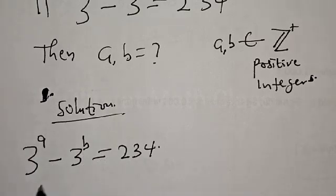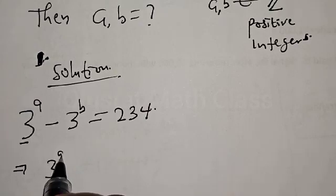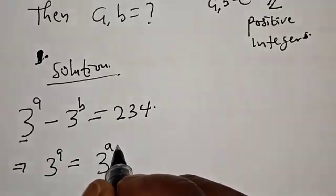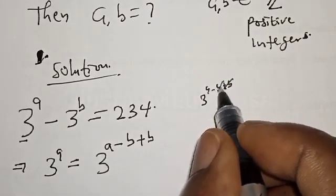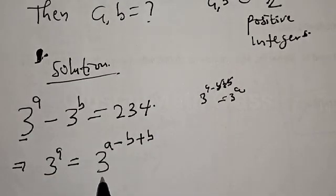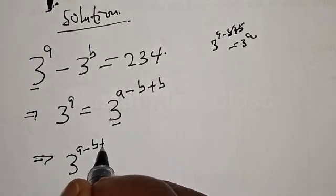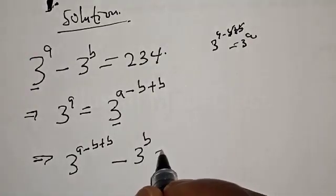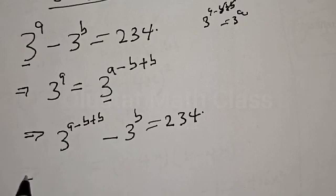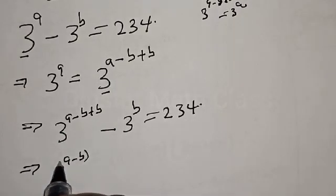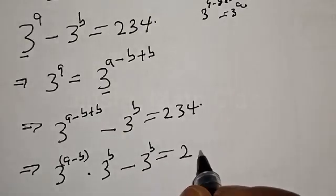Solution: we have 3 raised to power a minus 3 raised to power b is equal to 234. Let's manipulate this. 3 raised to power a can be expressed as 3 raised to power a minus b plus b. If you expand that, you are left with 3 raised to power a. So we can write 3 raised to power a minus b multiplied by 3 raised to power b, minus 3 raised to power b, equal to 234.